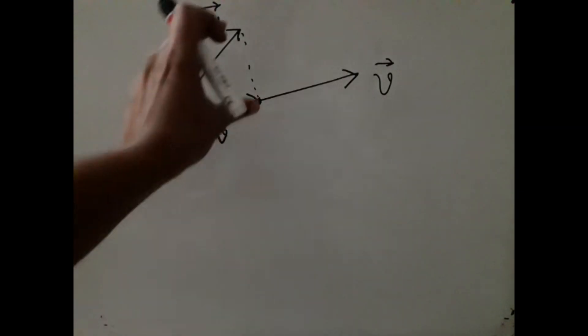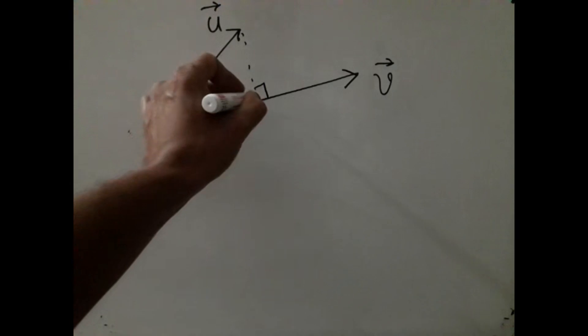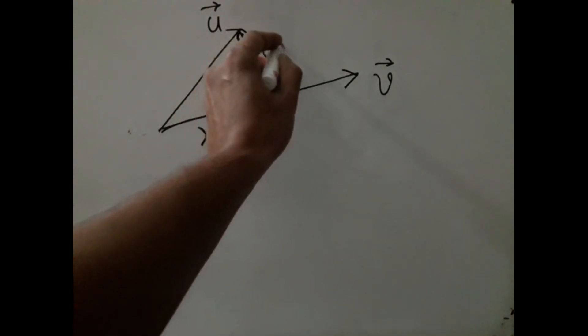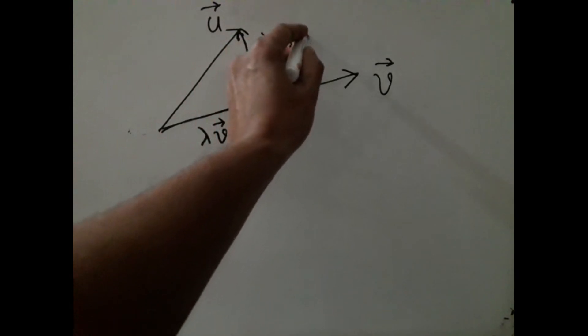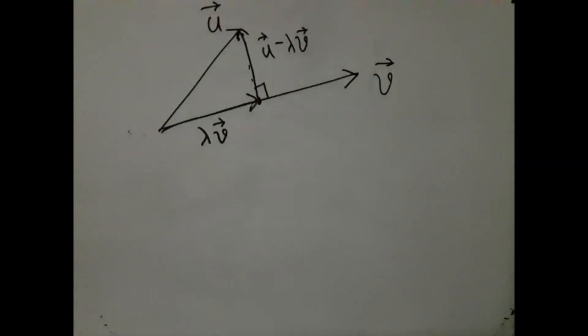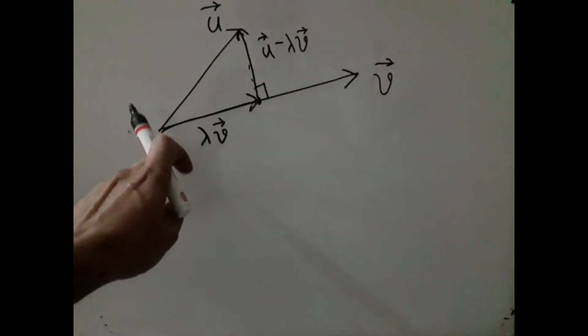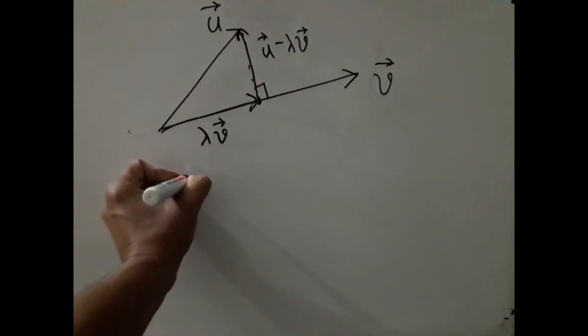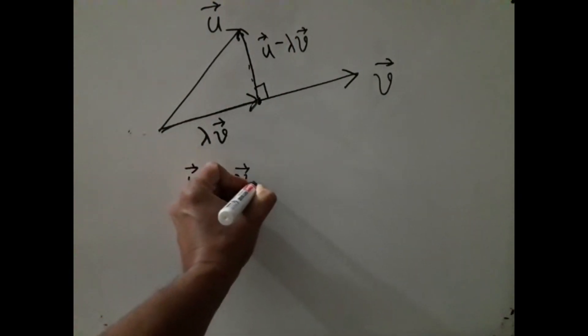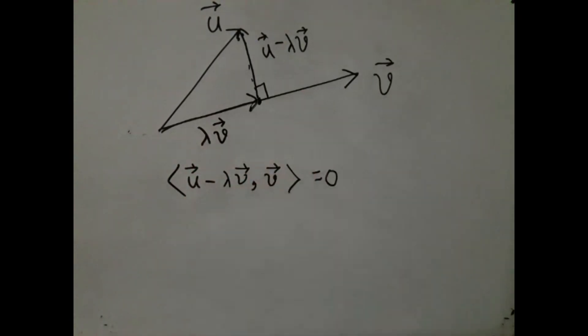Now we also need this thing to be orthogonal to v. This is the vector u - λv. Here we want this to be orthogonal to v, which means we want the inner product of (u - λv) with v to be 0.